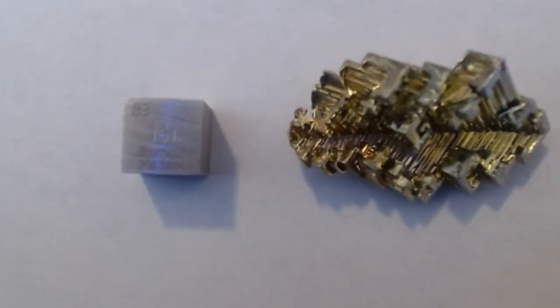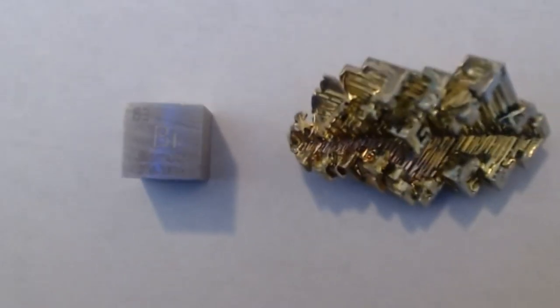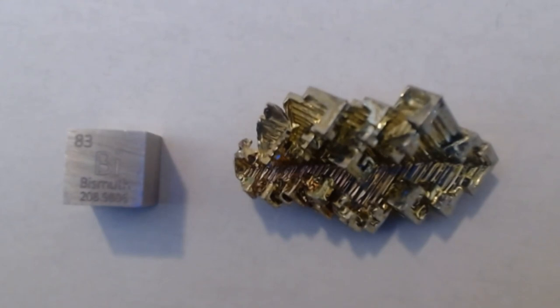It's considered a post-transition metal. It's in group 15. It has a high resistance to magnetism. It also has very low thermal conductivity, has a very low melting point. And even though it's considered fairly stable, it has very low toxicity, barely any radiation, which we're actually going to talk about in a little bit.